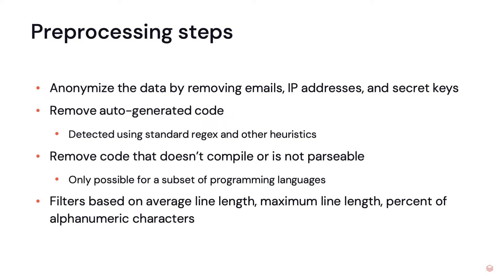The pre-processing steps are pretty standard data processing, much of which is covered in the blog post. You anonymize the data — remove emails, IP addresses, and secret keys. We remove auto-generated code using regex to detect it, and apply other heuristics to detect minified code like minified JavaScript. We also remove code that doesn't compile or is not parsable, which you can only do for certain languages. Then we do standard filters based on average line length, maximum line length, and alphanumeric characters.